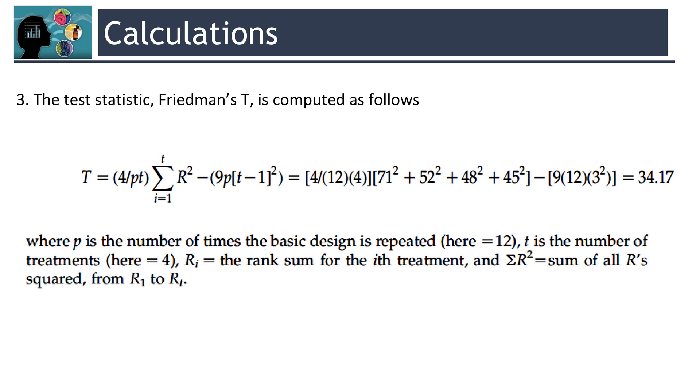And Ri is the rank sum for the ith treatment. And the sigma R squared is the sum of all R squared from R1 to RT. So for our sample, T is equal to 34.17.